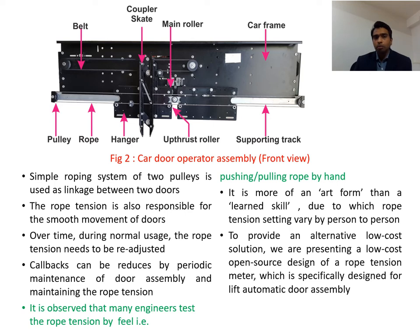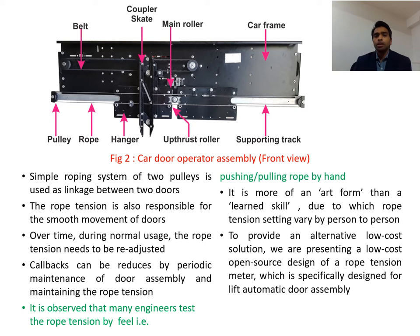The smooth movement of the door panels can be obtained by maintaining the required tension in the rope. Over time, during normal usage, the rope tension needs to be re-adjusted. As previously explained, in most cases the service engineer determines it by feel. The alternative is the usage of a measurement tool. Various analog and digital rope tension meters are available in the market, but these are not specifically designed for lift door operators. To provide a low-cost alternative, we are presenting a low-cost open-source design of a rope tension meter specifically designed for lift automatic door assembly.